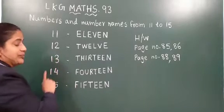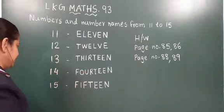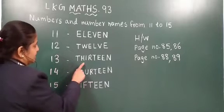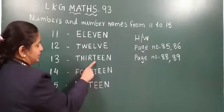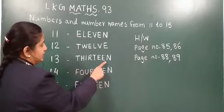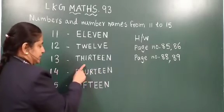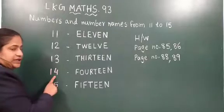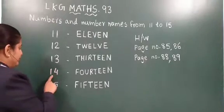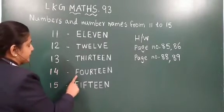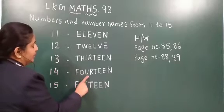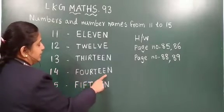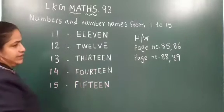Now after twelve the number is one three — thirteen. The spelling: T, H, I, R, T, E, E, N. Thirteen. Now after thirteen the number is fourteen — one four. Spellings: F, O, U, R, T, E, E, N. Fourteen.